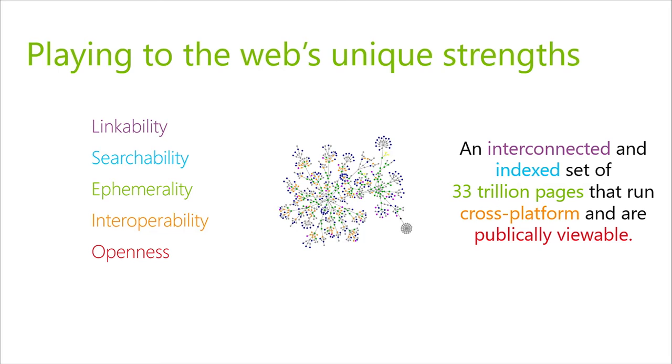Then there's the interoperability factor — the fact that I can write code and deploy it where it runs on five major browsers, different platforms, operating systems, devices. And of course there's the openness factor — I can go view everybody's code, most of these sites are publicly available. When you think about that, you can actually map some of this to how we prioritize features in our new browser, Microsoft Edge.